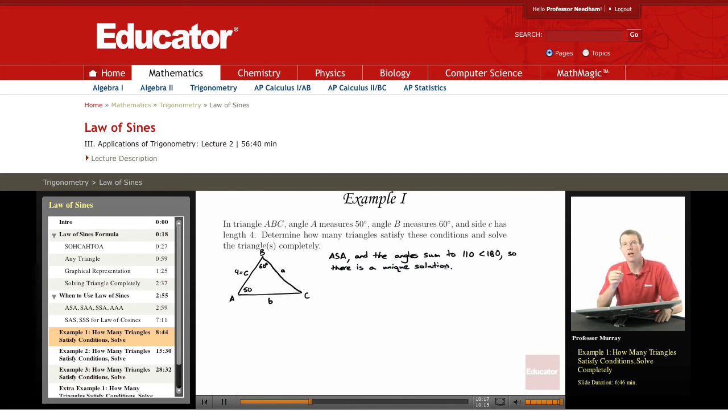So we're going to try to solve the triangle. Remember that means find the measures of all the angles and the lengths of all the sides. Well there's one that's very easy to start with, which is angle C, because that's just 180 minus A minus B, which is 180 minus 110, which is just 70 degrees.